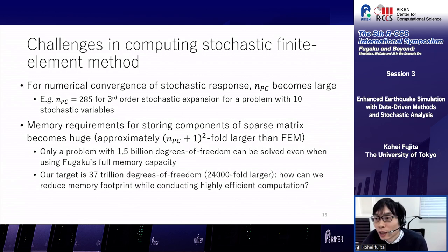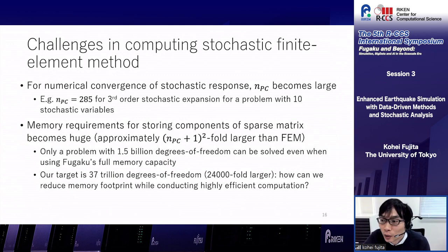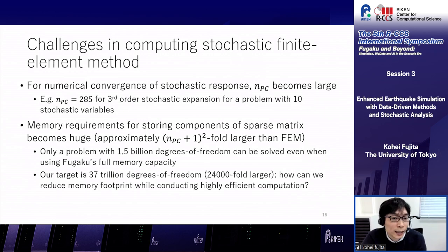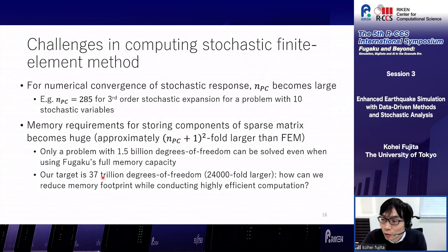In theory we can solve the stochastic FEM equations, but this is very challenging for large problems requiring assurance of convergence in both spatial and probabilistic domains. For numerical convergence of a stochastic response, at least a third-order stochastic expansion is needed, and for a problem with 10 stochastic variables N_PC becomes 285. This means the degrees of freedom becomes 286-fold larger than the deterministic problem, and memory requirements for storing sparse matrix components become huge. With N_PC = 285, only a 1.5-billion DOF problem can be solved using Fugaku's full memory capacity, whereas we want to solve a 37-trillion DOF problem — so we must find a way to reduce the memory footprint while conducting highly efficient computation.